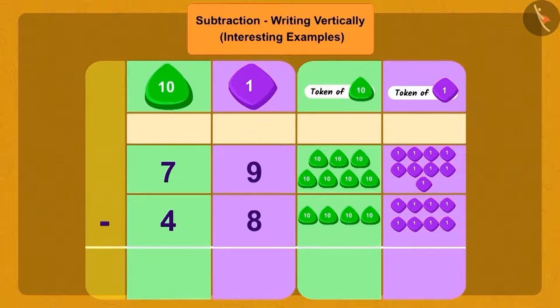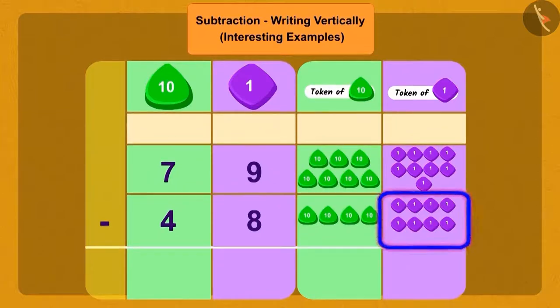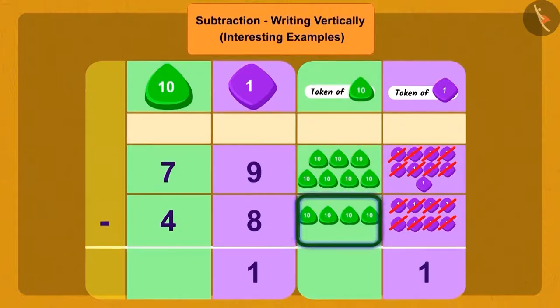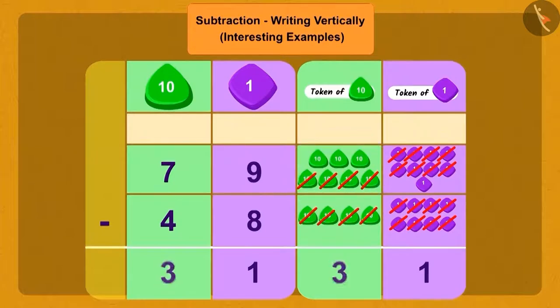Now if we remove eight ones from nine ones, then how many ones are left? One one. Now if we subtract four tens from seven tens, then three tens are left.